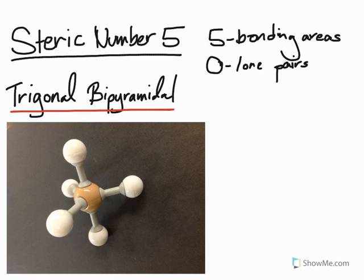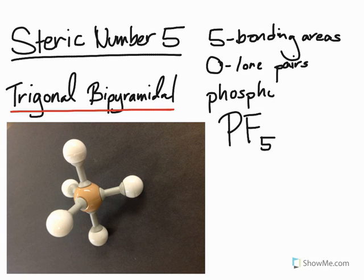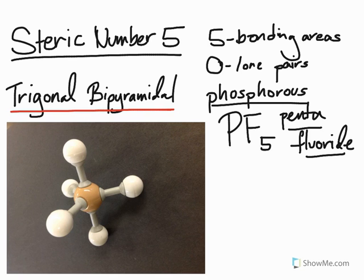One example would be a molecule such as PF5. Note this is a covalently bonded molecule. The name would be phosphorus pentafluoride. Now how do we actually put this molecule together and how do we draw this using the wedge and dash method?